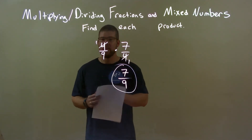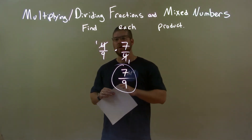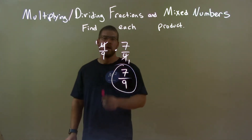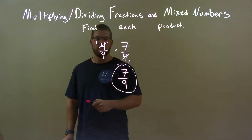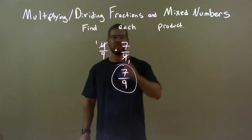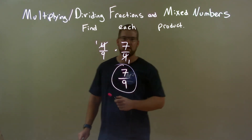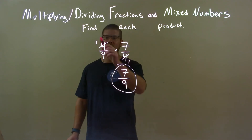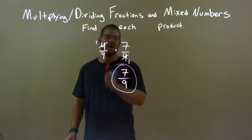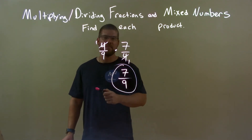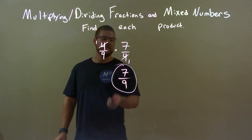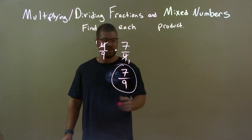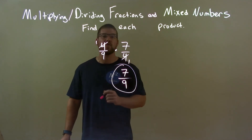Quick peek. We're given 4 over 9 times 7 over 4. We saw that the 4's cancel each other out and we're left with 7 over 1 and 1 over 9. Multiply that out and we got 7 over 9. So again, final answer: 7 over 9.